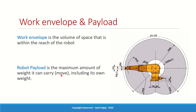Payload is simpler — it's essentially the amount of weight the robot can carry, including its own weight. If you give it a load heavier than its payload rating, the robot will not move and may even get damaged.